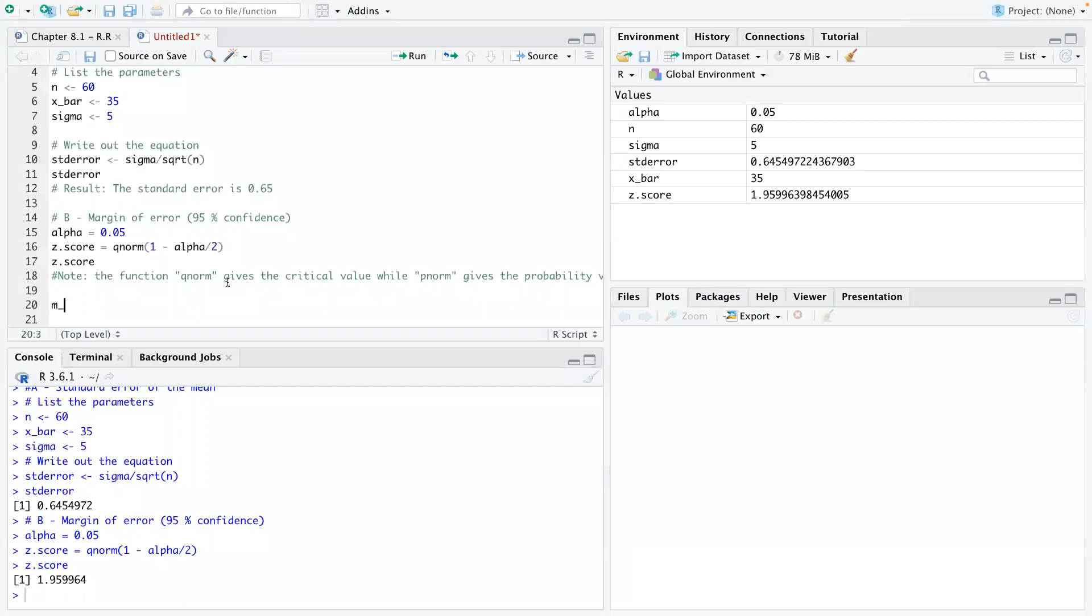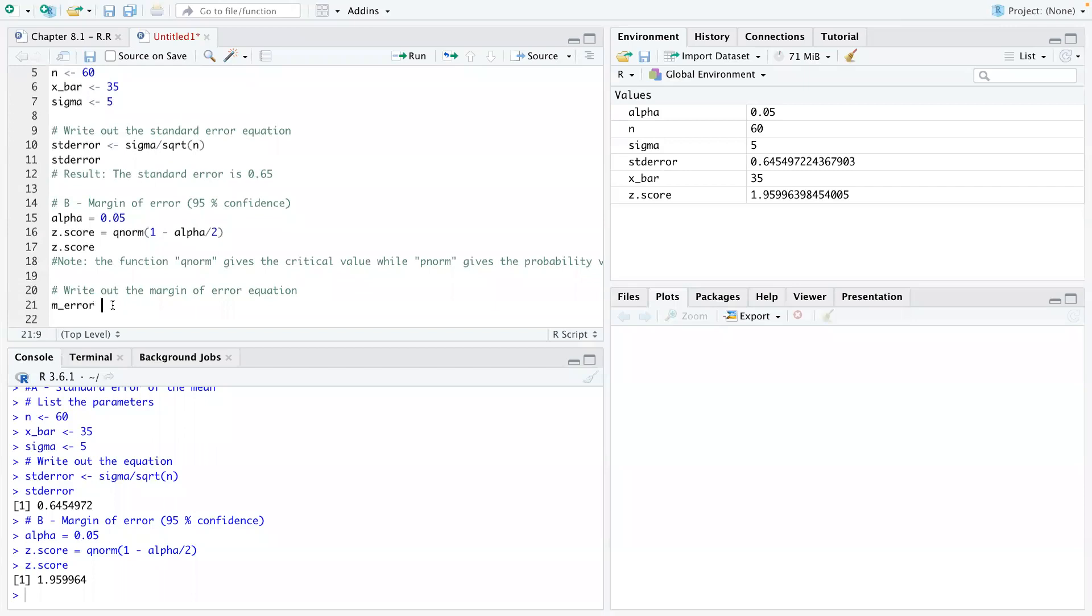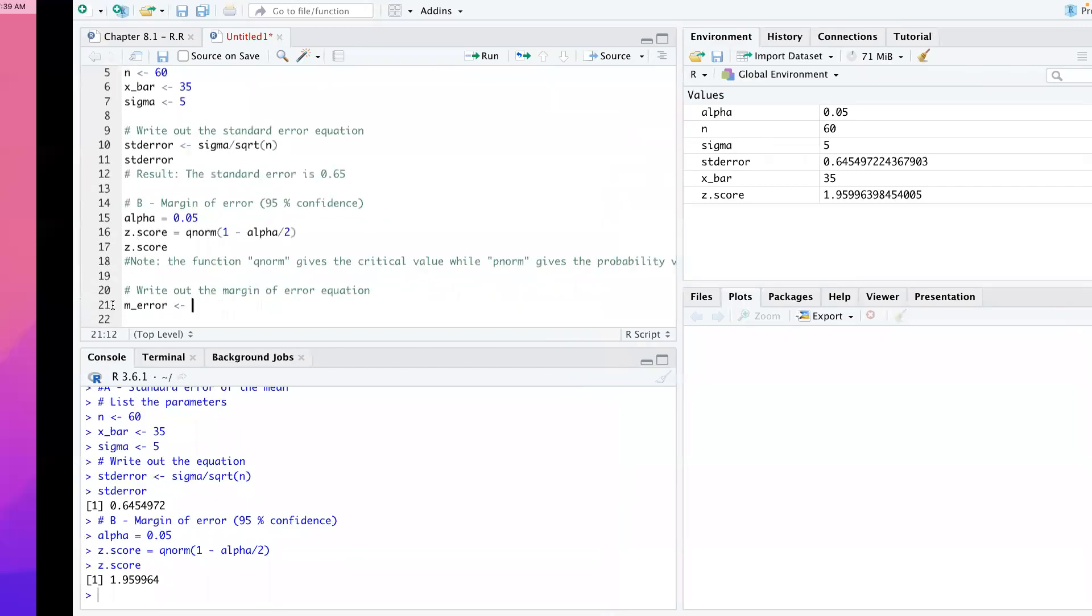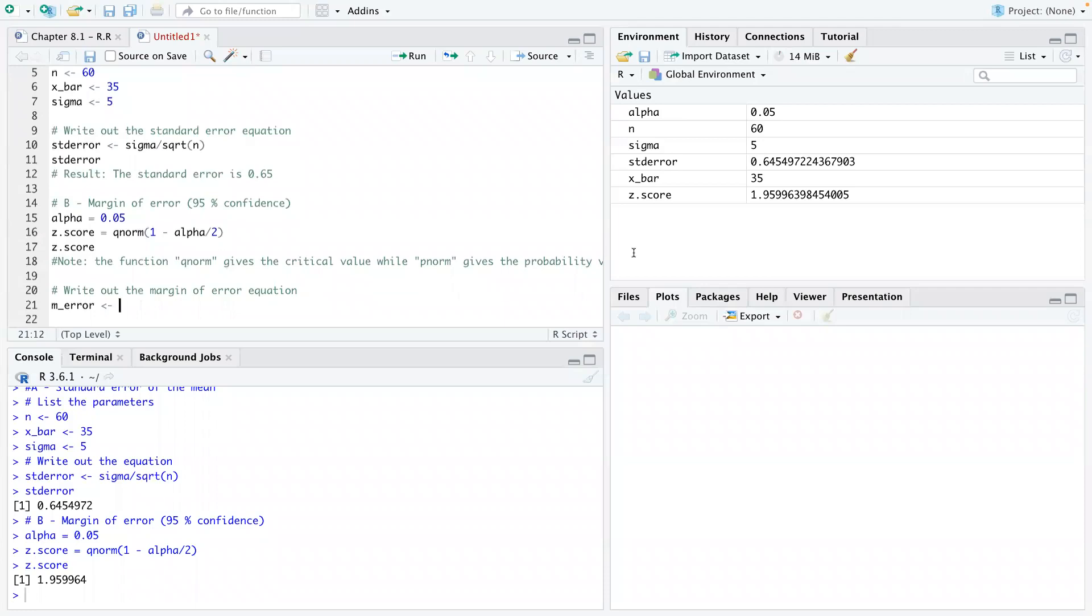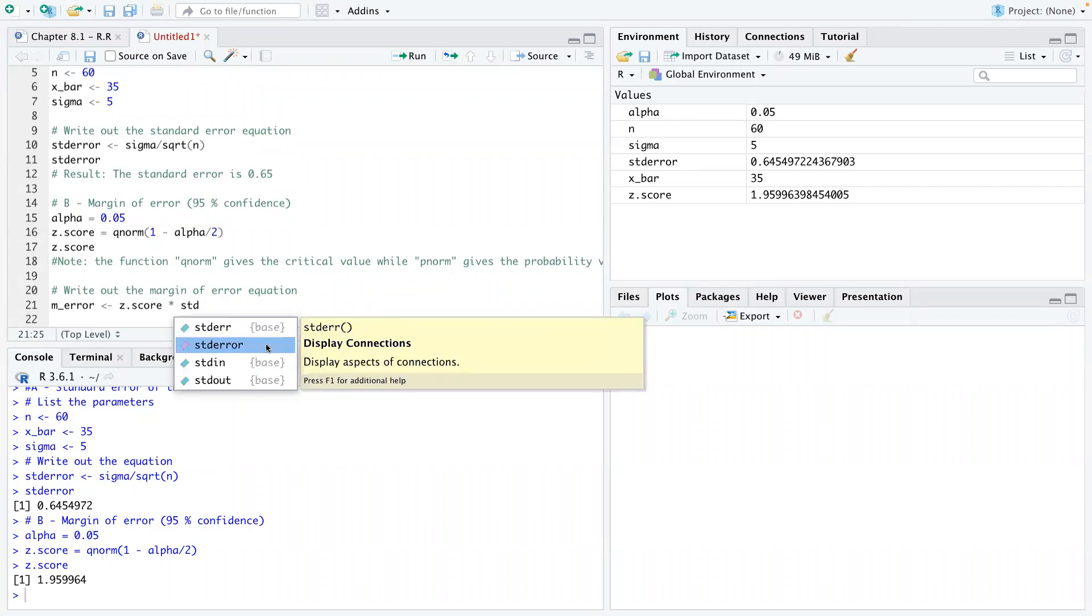So for us to find the margin of error, we know we write down the equation as usual. So remember, we say it's this z alpha over 2 multiplied by the standard error. So that's what I'm going to write there. z-score multiplied by the standard error.